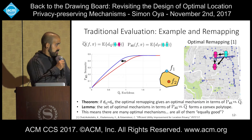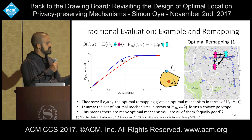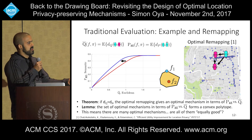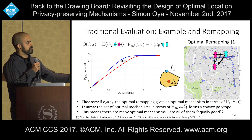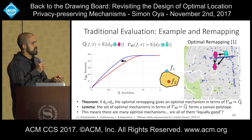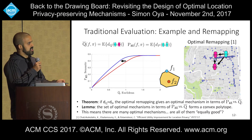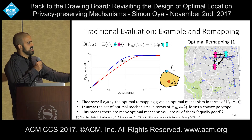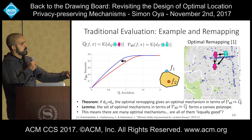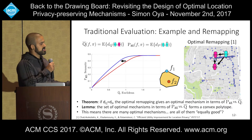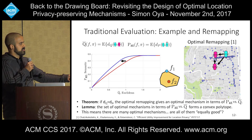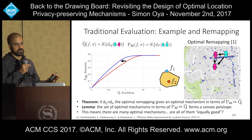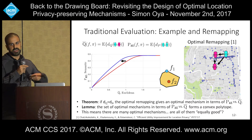This year at PETS, a remapping mechanism was proposed that reduces quality loss and improves utility without reducing privacy. The remapping works as follows: we generate the obfuscated location, then as users we compute the posterior — the probability of being at each point — and then we pick a strategically chosen alternate obfuscated location. On average we are reducing our quality loss, and since this remapping does not use where the real location was, we are not losing any privacy. A small result we have is that if the same metric is used for quality loss and adversary error, applying the optimal remapping to any mechanism yields a new mechanism that is always optimal.